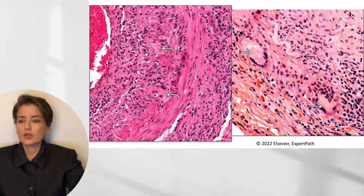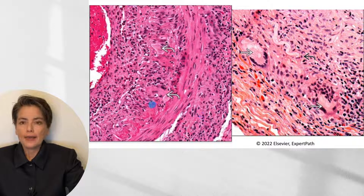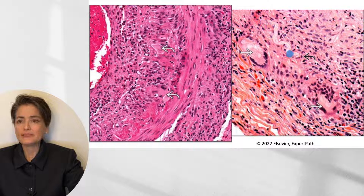Here are two histological examples of giant cell arteritis. You can appreciate how cellular the vessel wall is due to abundant inflammatory cells. The arrows point to multinucleate giant cells, which are part of the granulomatous response. In the second image you can see another multinucleate giant cell, and here you can see the elastin — part of the vessel wall — that is being destroyed by this inflammatory response.